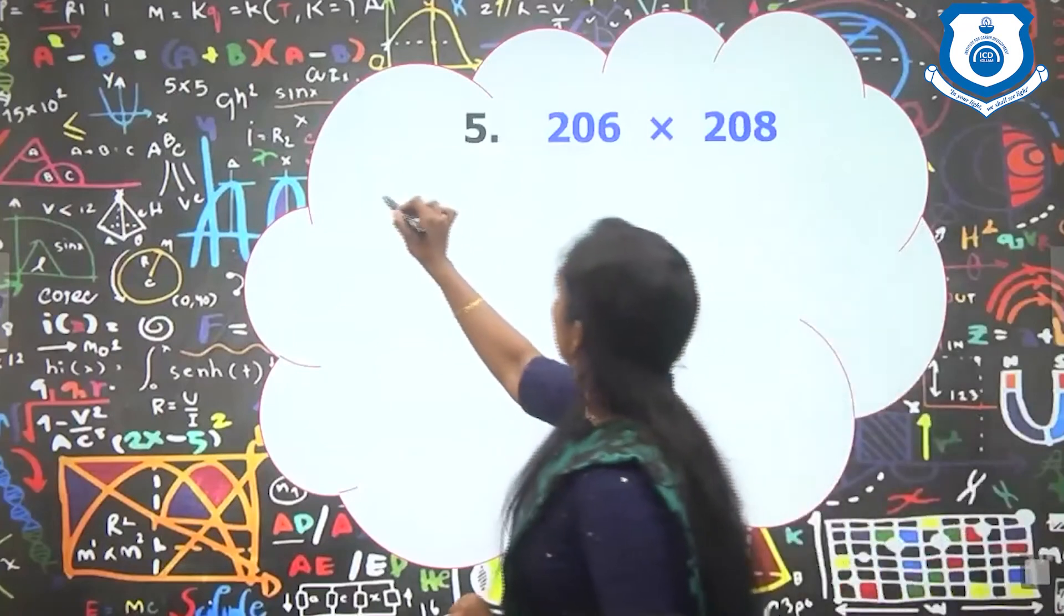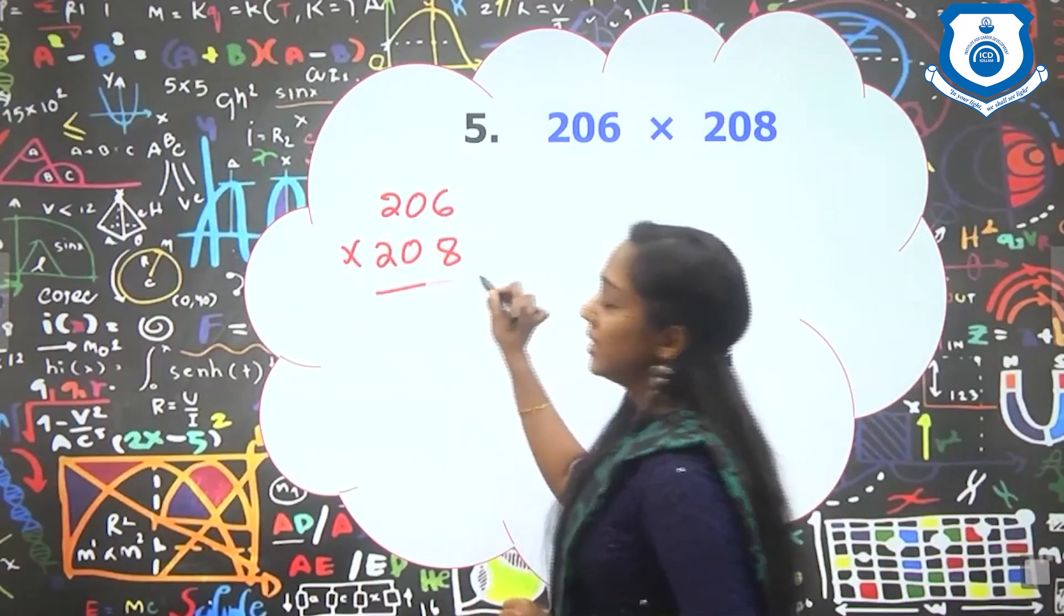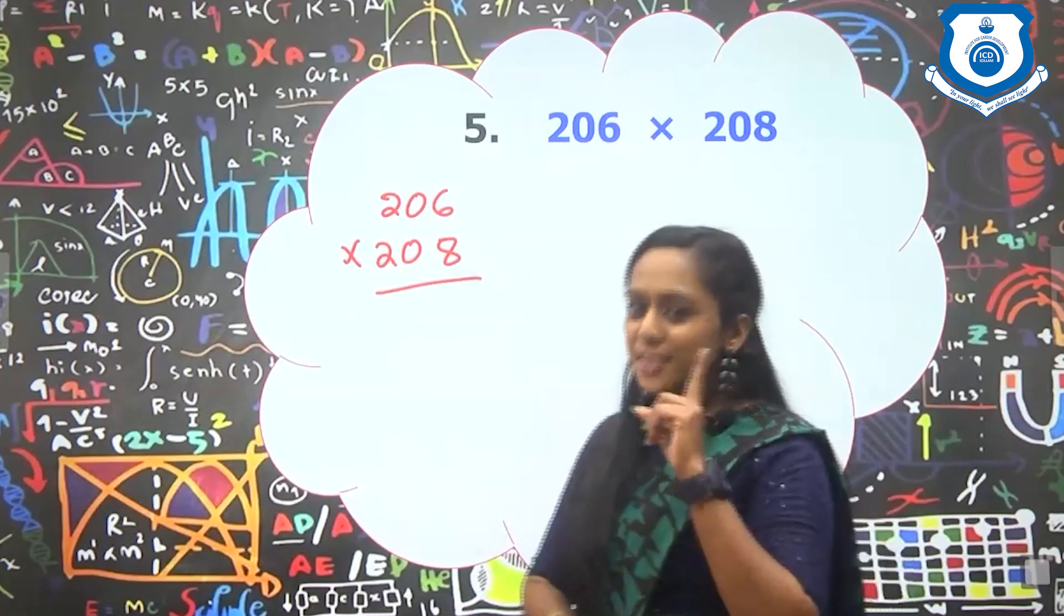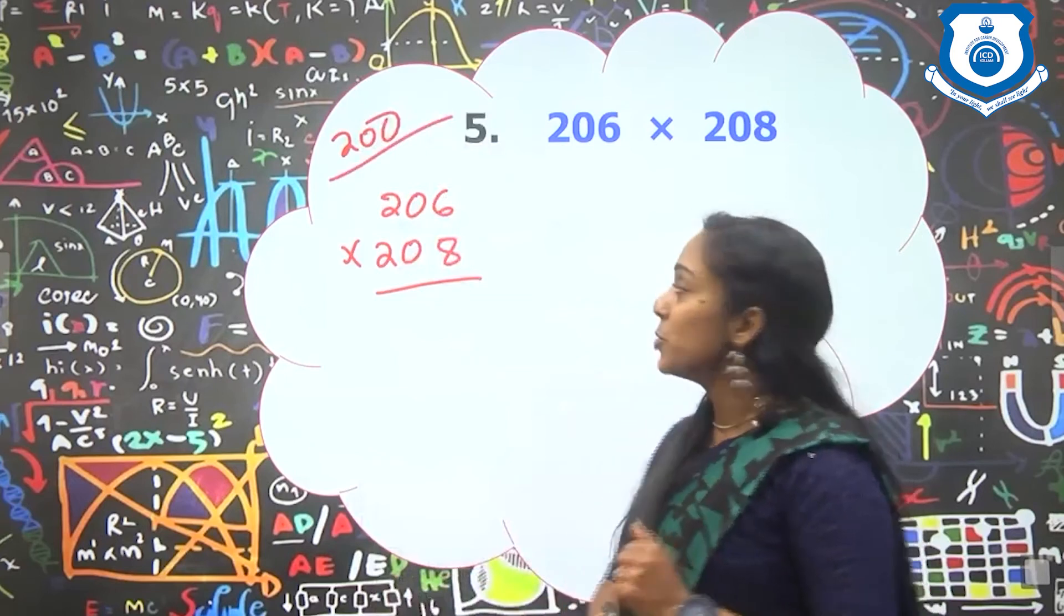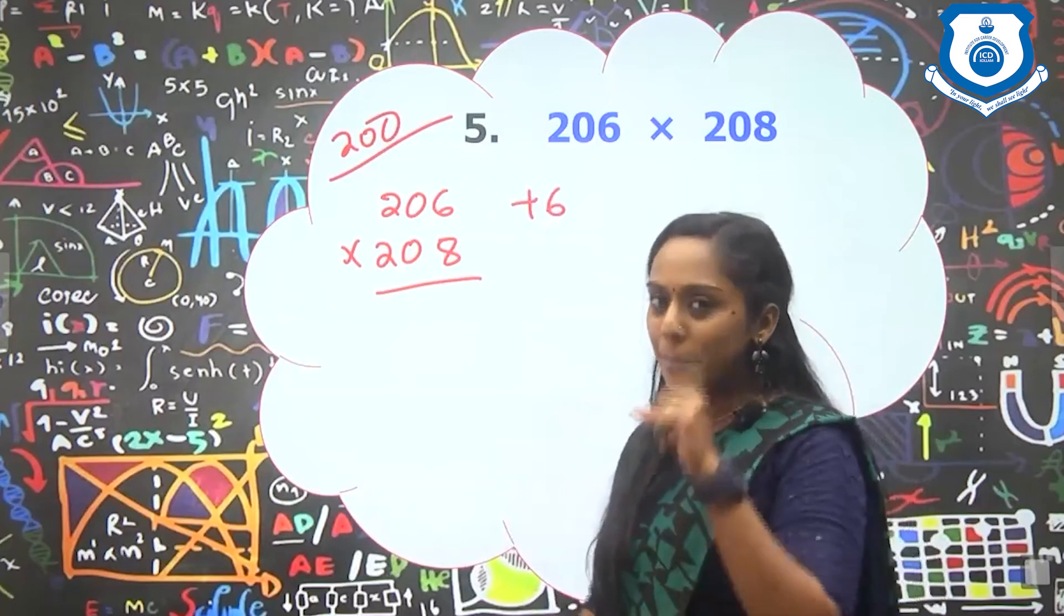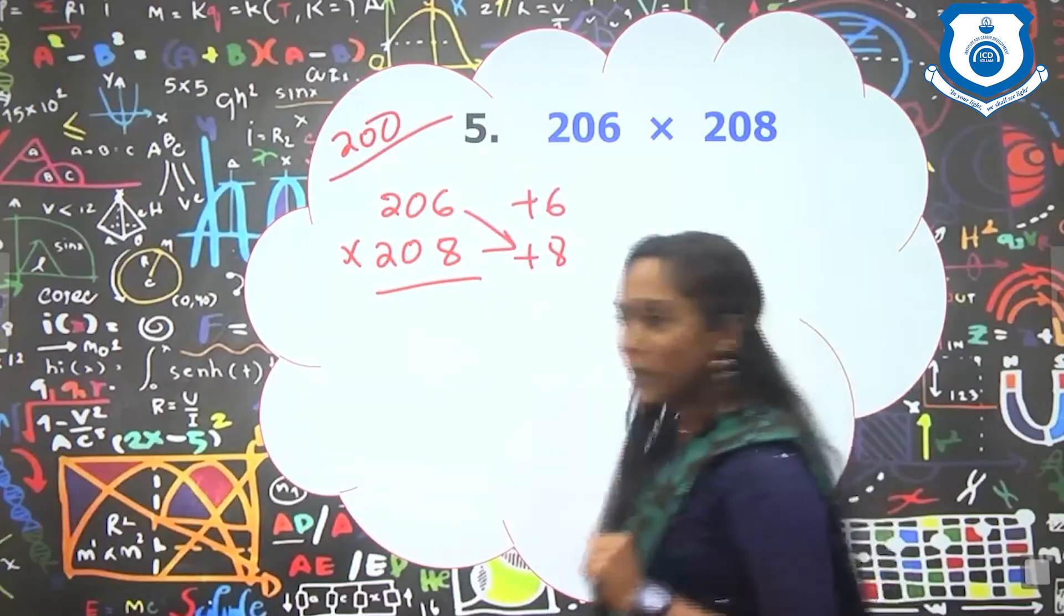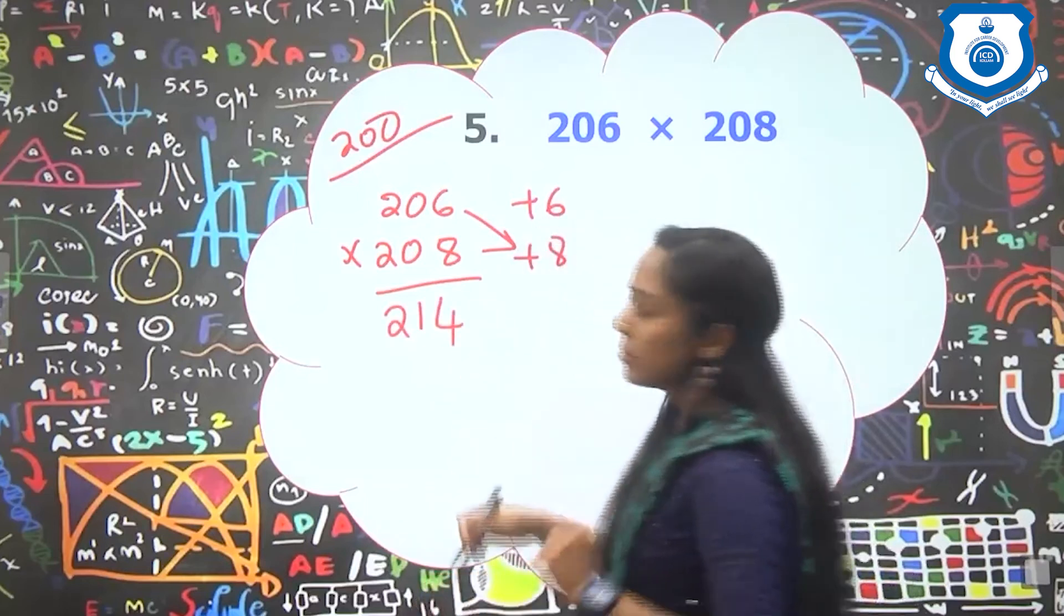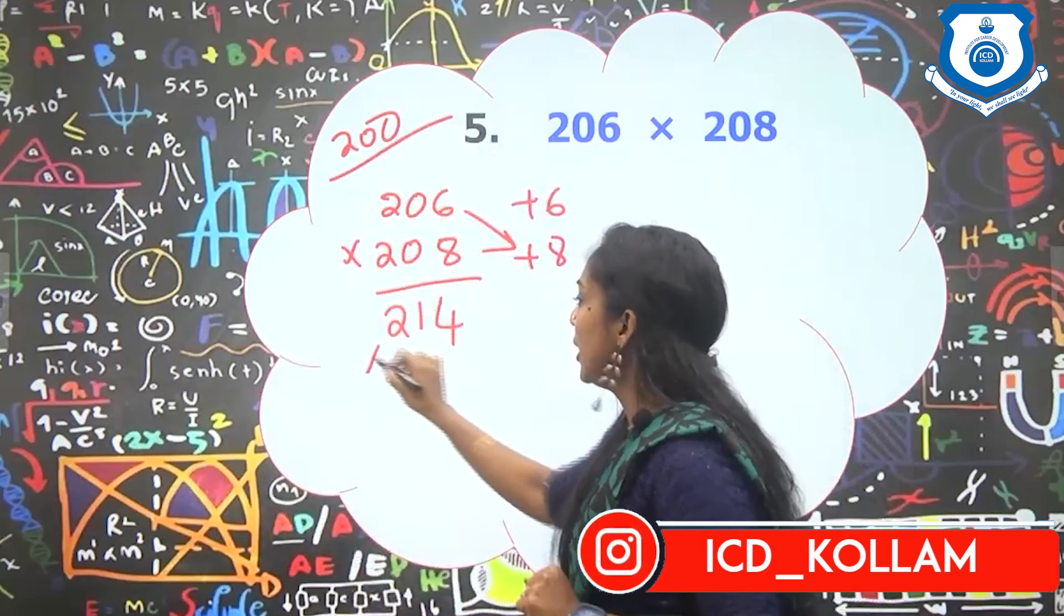Question number 5: 206 into 208. So here both these numbers are coming under the base 200. So our base is 200. Just compare: 206 is 6 greater than 200. So it will be plus 6. And the other one is plus 8. So here 206 plus 8, that is 214. Now you have to multiply this number with our base which is 200.